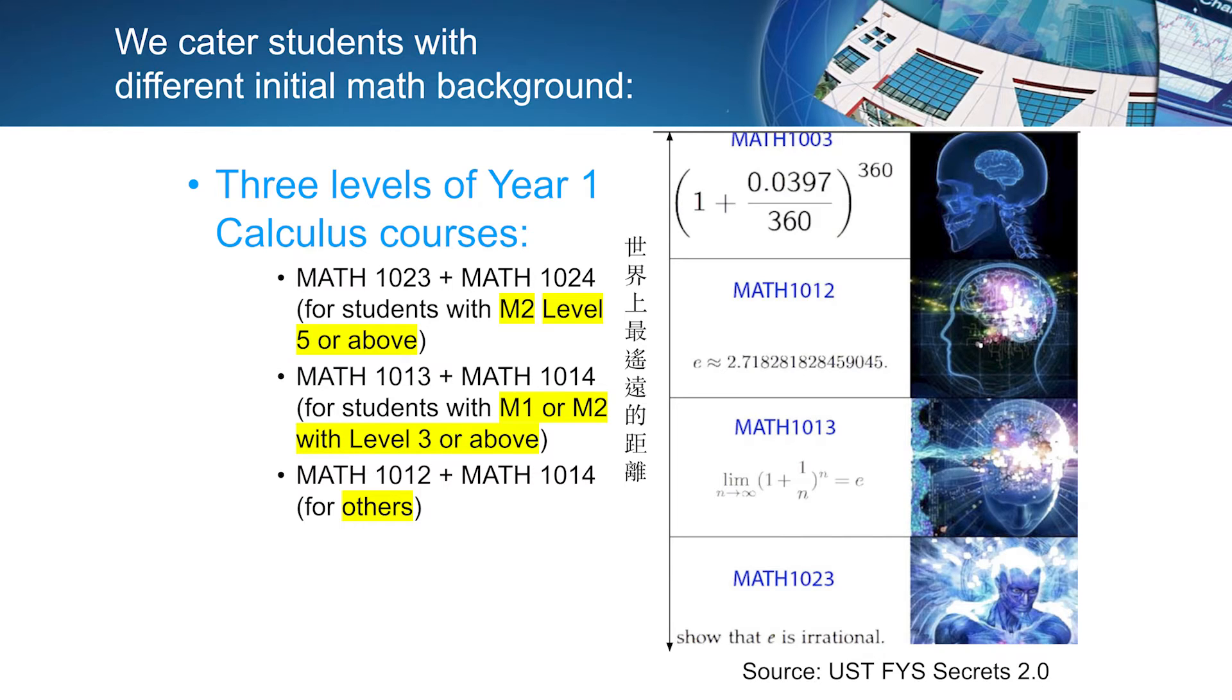We offer three levels of calculus courses according to their DSE scores. For example, if your M2 is level 5 or above, we will recommend you to take MATH 1023, which is honors calculus. You will learn more advanced material, much deeper, much more rigorous than the regular ones.